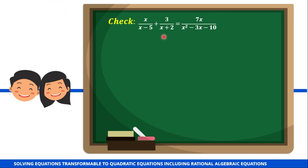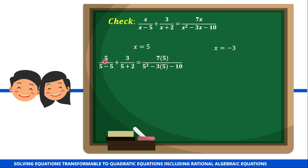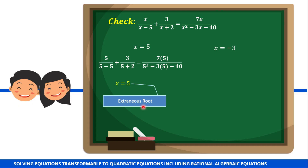Now let's check using our original equation. Recall that our restricted values include positive 5. Substituting x equals 5: we get 5 divided by 5 minus 5 in the first denominator, which becomes 0. The denominator becomes 0, which is not allowed. Therefore, x equals 5 is an extraneous root or solution.